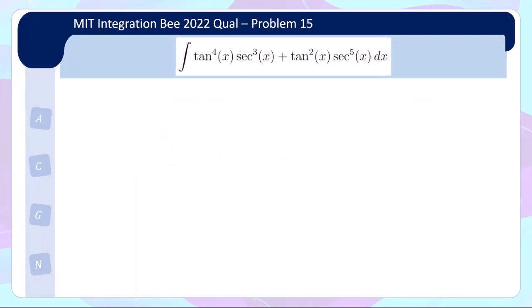Let us take a look at problem 15. This problem looks complicated. The way I solve it involves another astute observation — it's hard to motivate how to see the solution, but it comes down to noticing there's a whole bunch of secant and tangent, where one term has more secant and the other has more tangent.